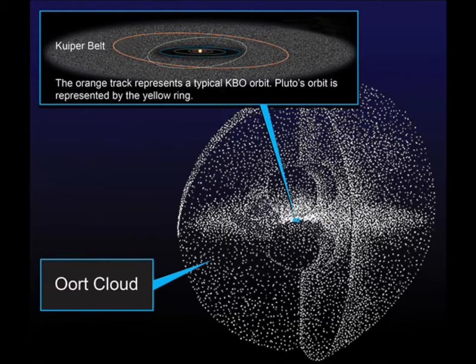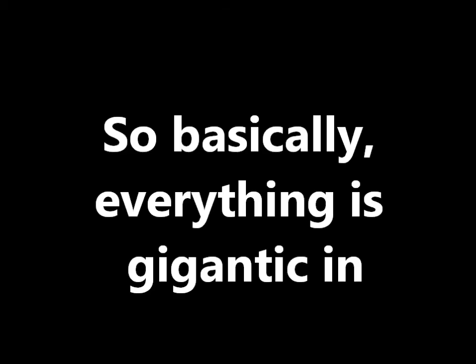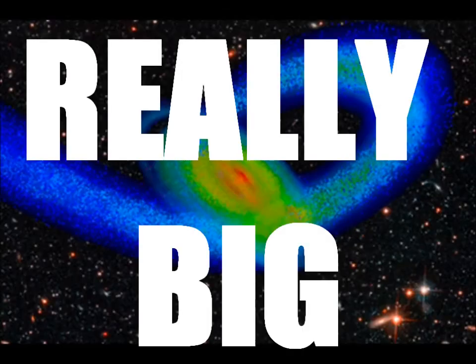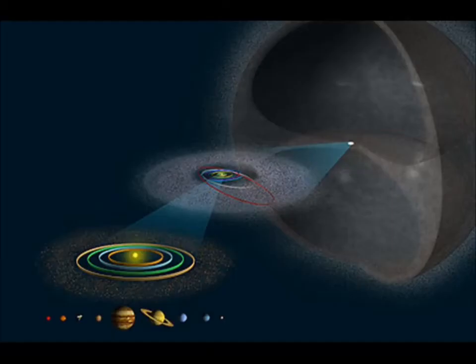All of this, though, is extremely small compared to our galaxy, and our galaxy is small to others, and so on. So basically, everything is gigantic in space — like, freaking huge. So there you go, there's my project. That's basically what the Kuiper Belt and the Oort Cloud are, and what they mean, and what they do, what their role is.